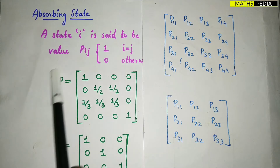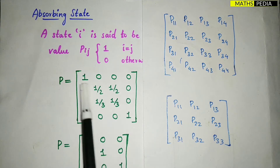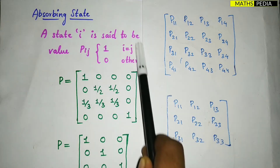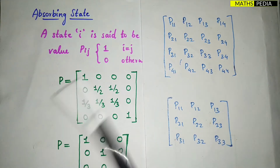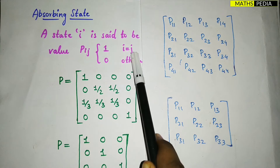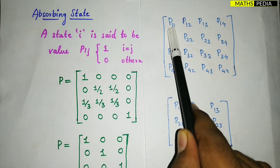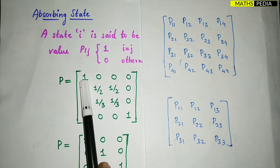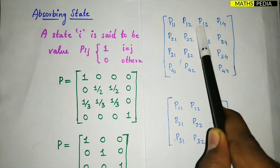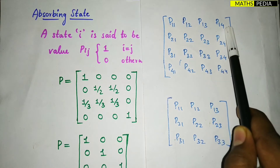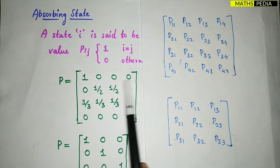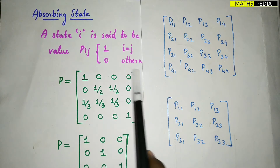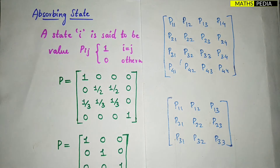Look at the first row of matrix P. We can see the first element which is P11. You have to check the criteria Pij where i equals j equals 1, 1. So P11 should be 1. Otherwise P12, P13, P14 should be 0. We can see that the first row is in absorbing state.